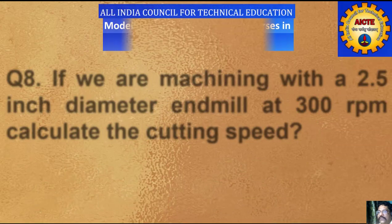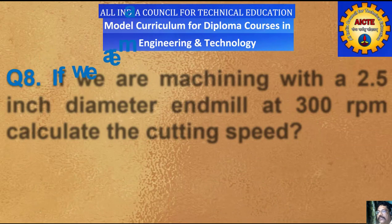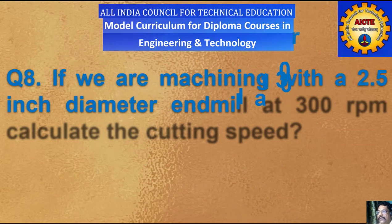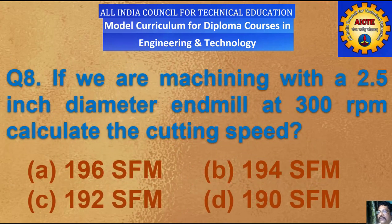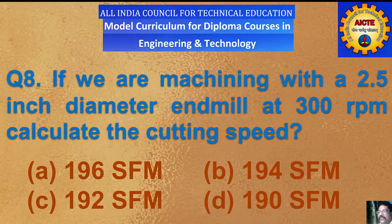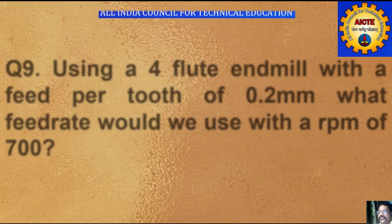Question number 8: if we are machining with a 2.5 inch diameter end mill at 300 rpm, calculate the cutting speed. A) 196 surface feet per minute, B) 194 surface feet per minute, C) 192 surface feet per minute, D) 190 surface feet per minute.